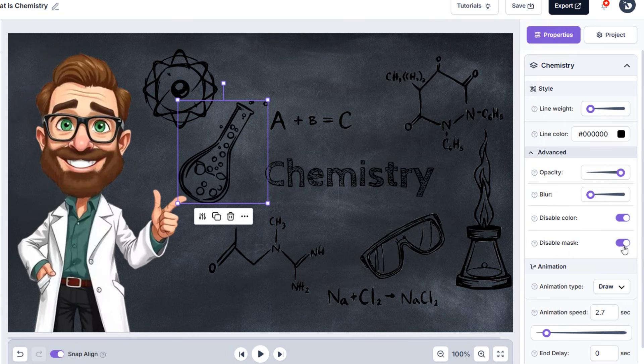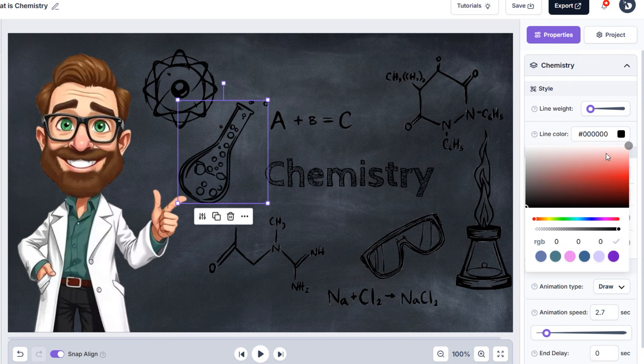Once the white fill is gone, I'll change the outline color to white so it's more visible in our scene. To do that, just navigate to the Properties panel on the right side, make sure you have the element in question selected, and change the line color to white.